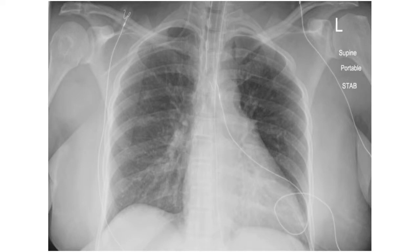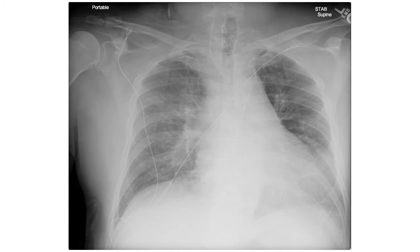However, it is not uncommon for the tip of the catheter to end up in the jugular vein, or as you can see here, in the subclavian vein, heading down the right arm. And even when lines are placed with ultrasound guidance, the catheter can end up in an artery, as happened in this case.